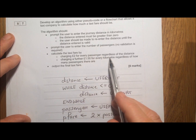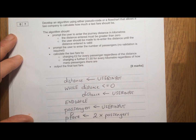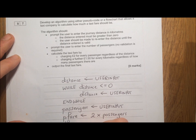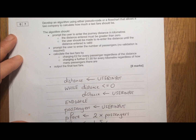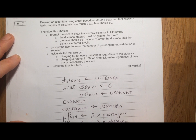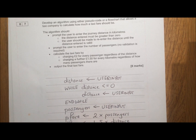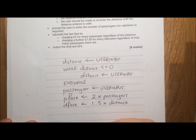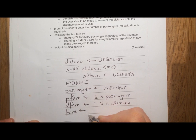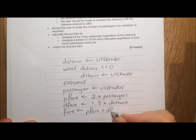We've then got the distance. We're told one pound fifty for every kilometre, and we've entered the distance, so I'm going to call that 'D_fare' for distance. D_fare is 1.5 times distance — one pound fifty times the distance in kilometres. All we have to do then is add the two together, so fare is assigned to be P_fare plus D_fare.